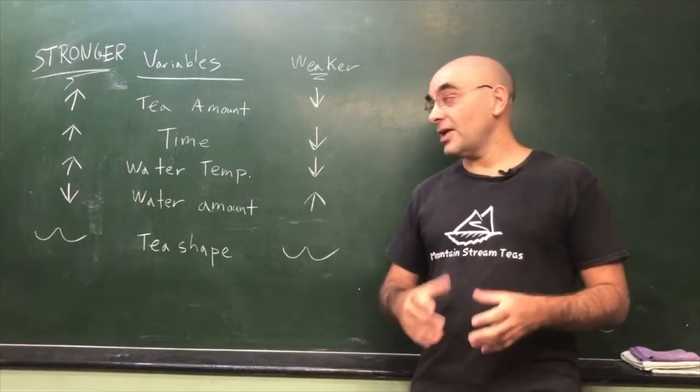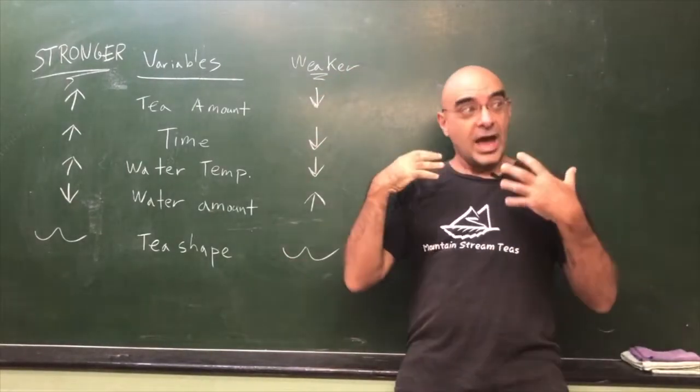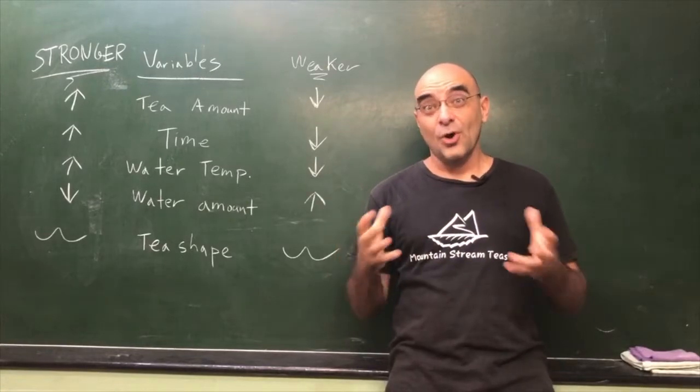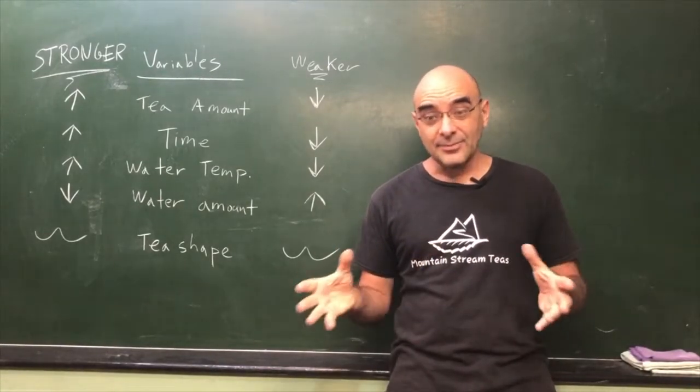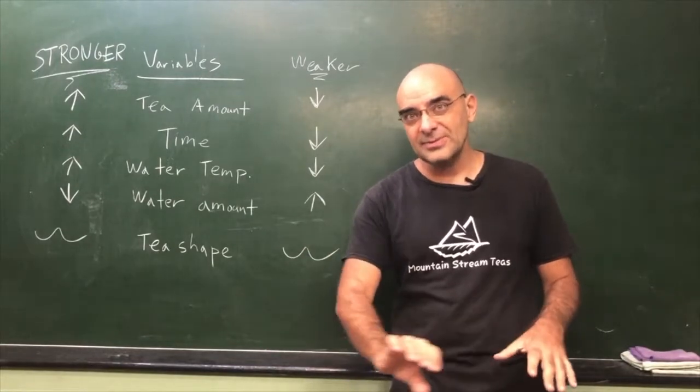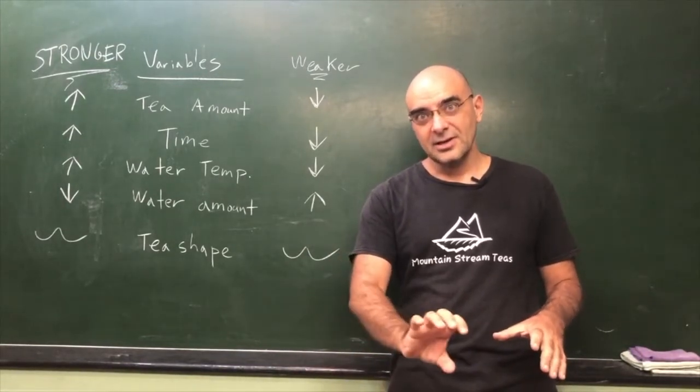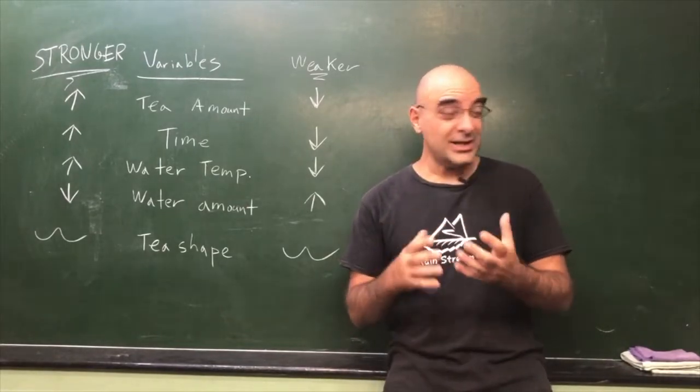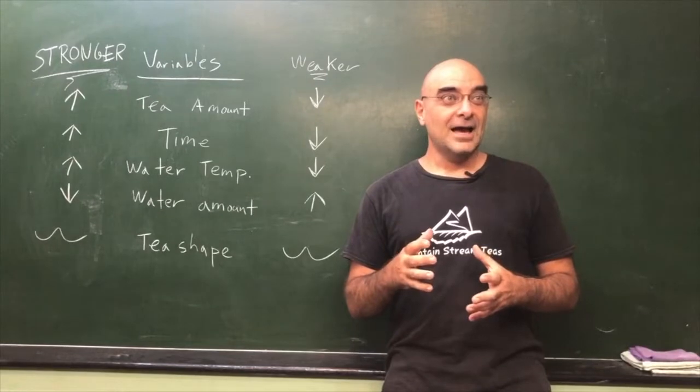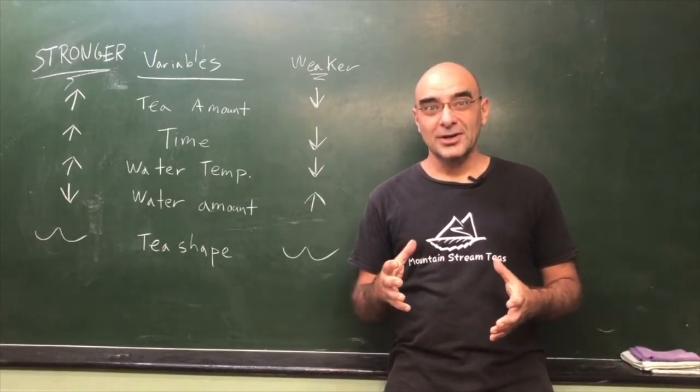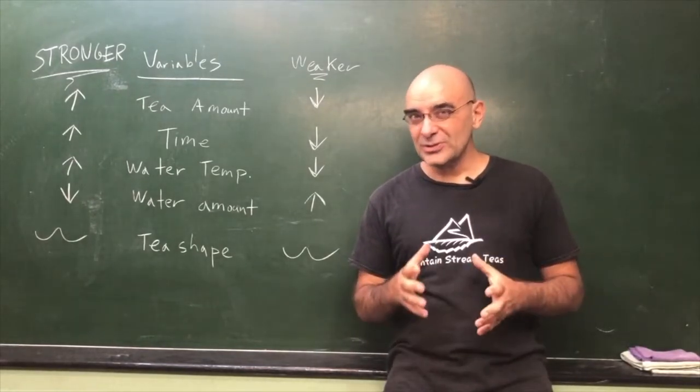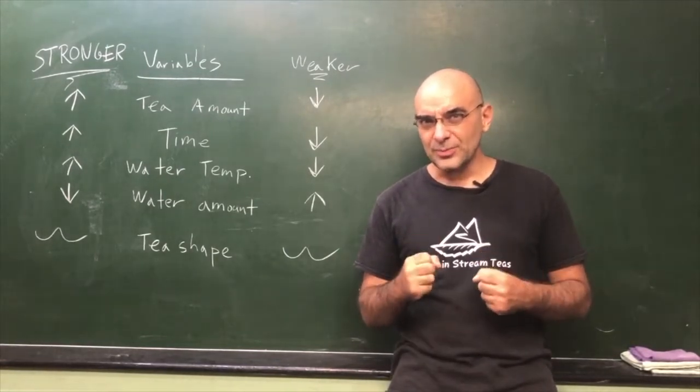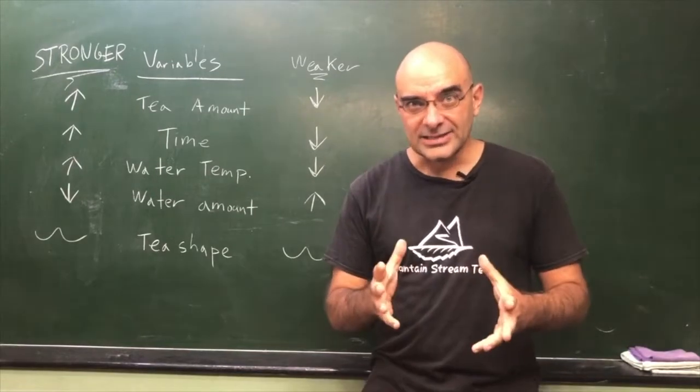As long as you're doing it with attention and with respect, you're doing it the right way. Now, what I'm going to do right now is go over some of these variables. I'm going to talk about how to brew tea, the basic variables, what happens when you change the variables. Then I'm going to come in a little bit closer and give you some examples of the different vessels that you would use to brew tea.